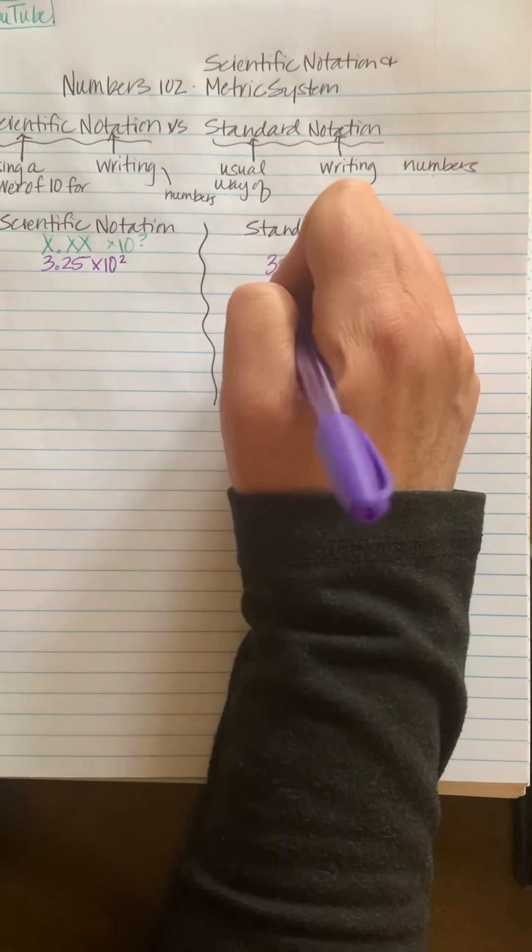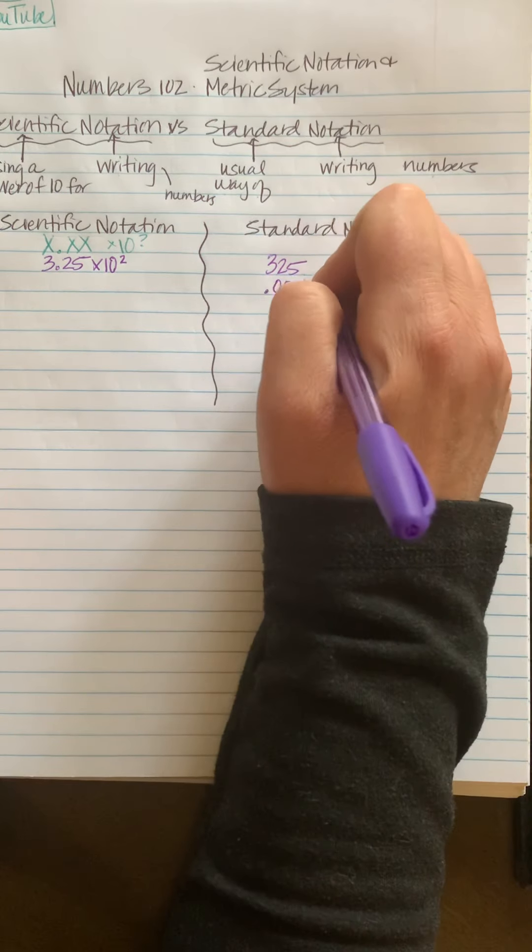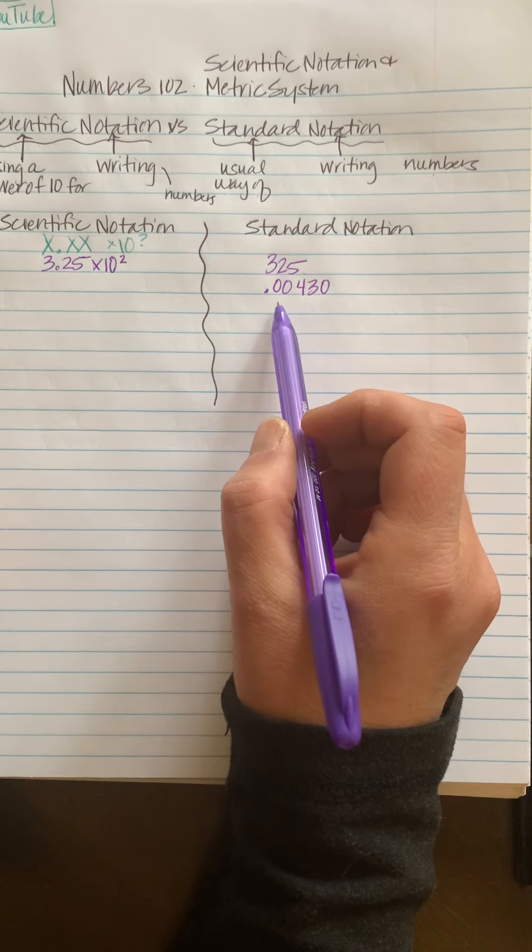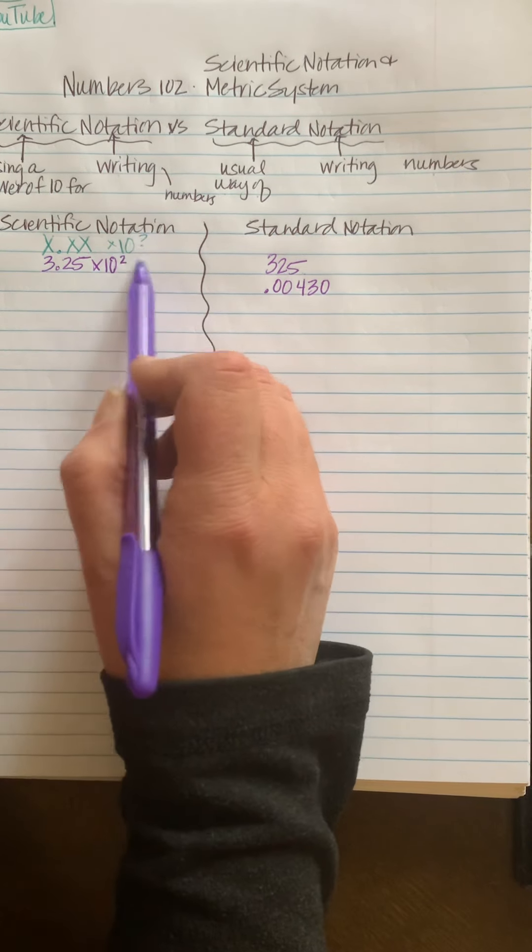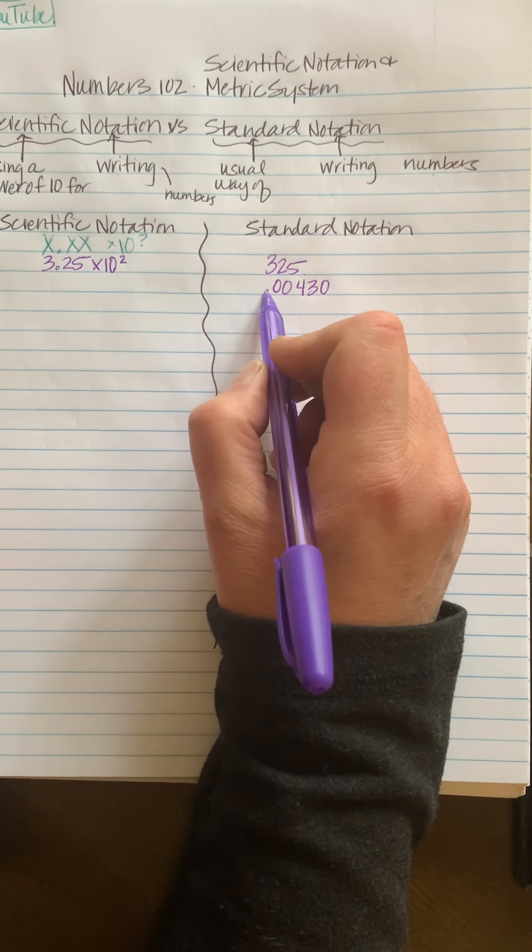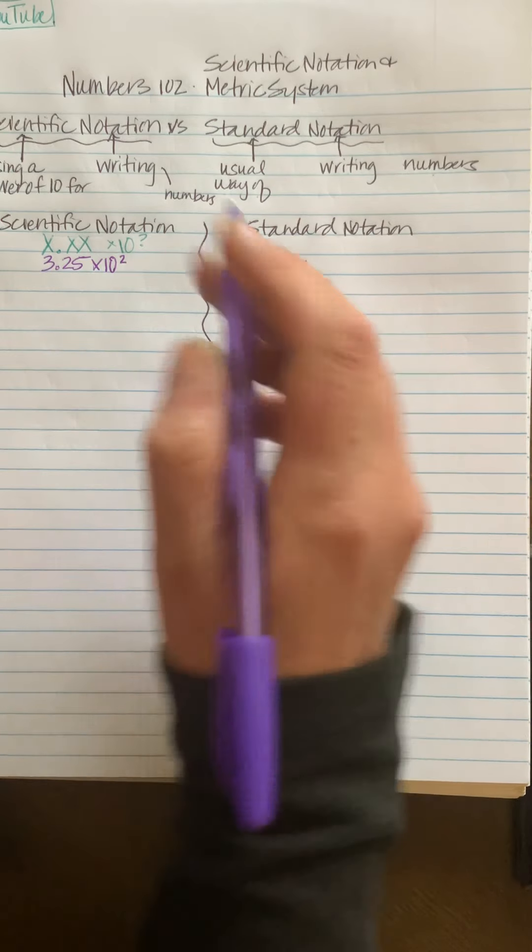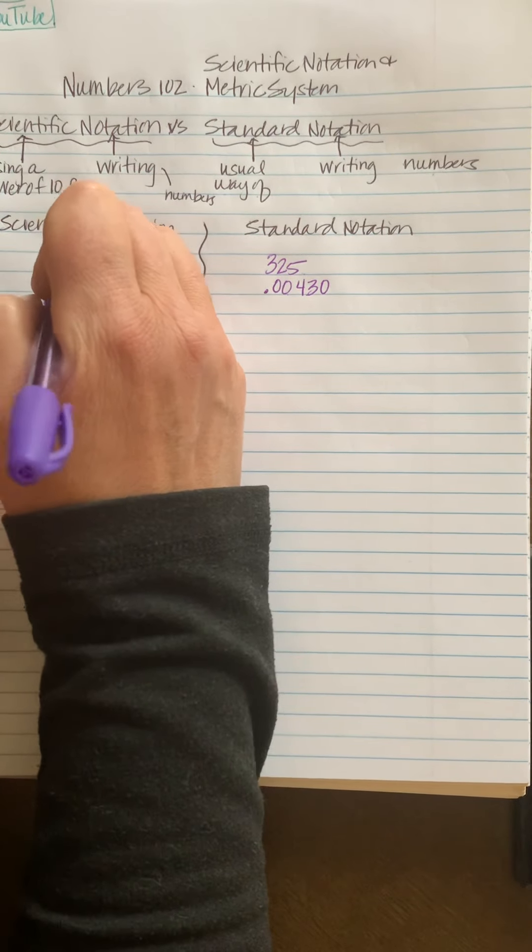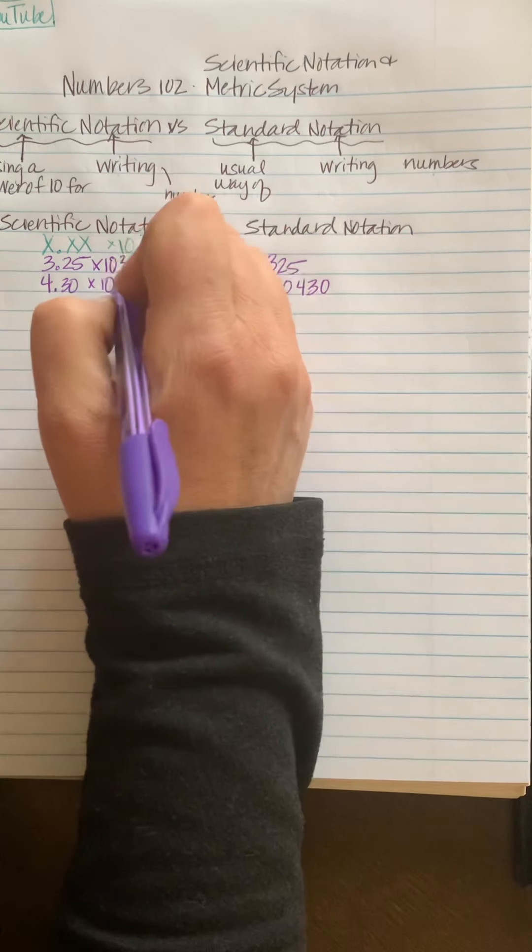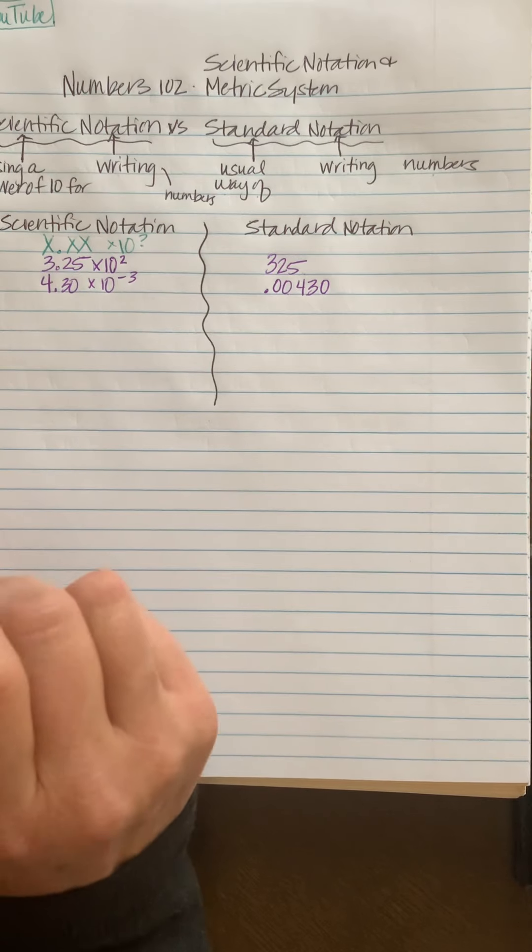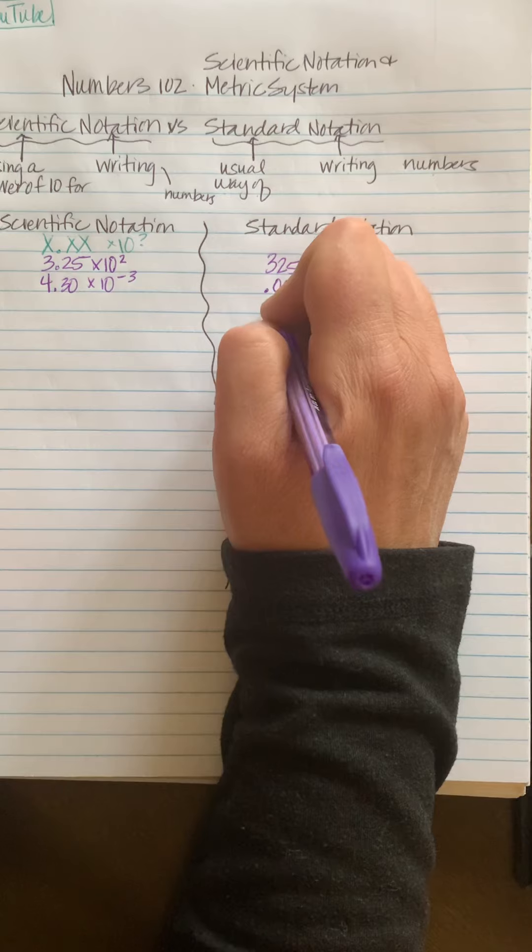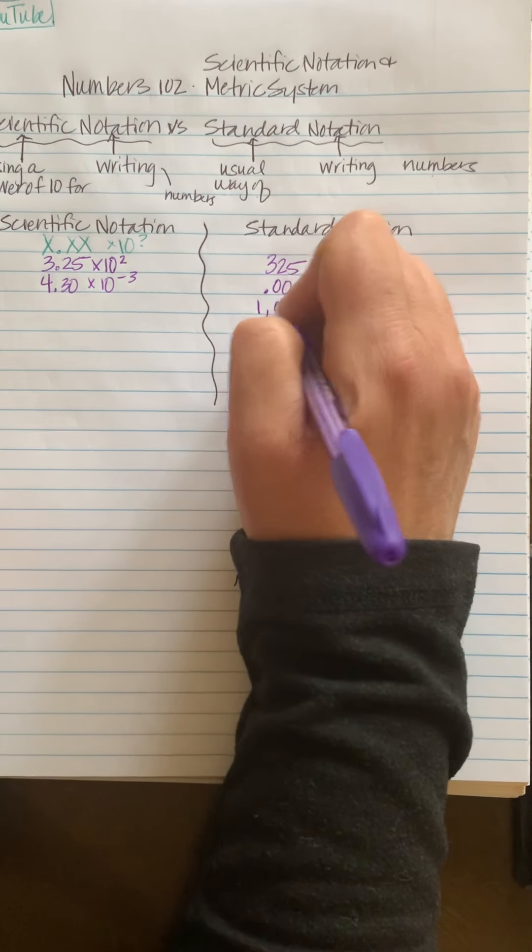A number like 0.00430 is a number that is smaller than one, so it's going to have a negative exponent up here. So the decimal is here and we're going to move it three spots to the right, so we're going to have 4.30 times 10 to the negative 3.